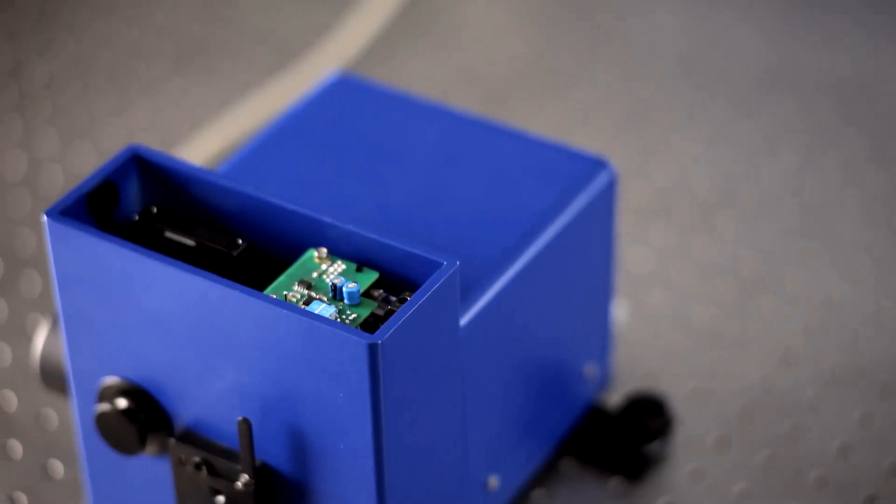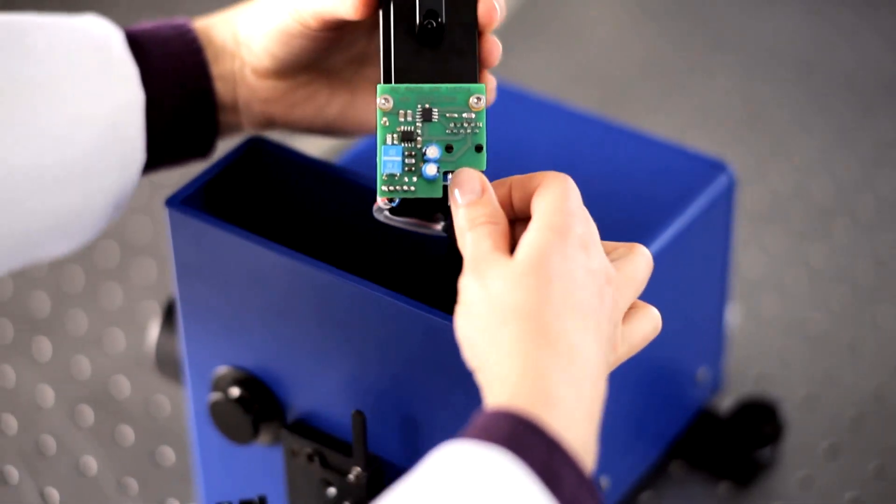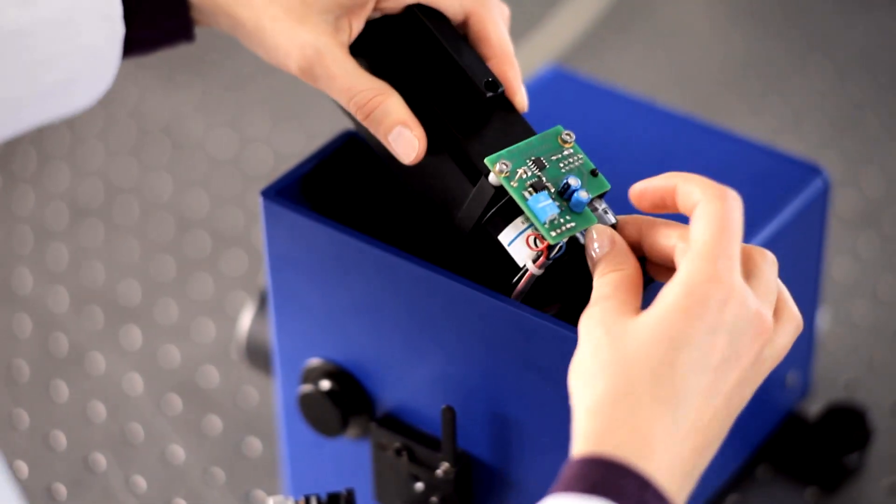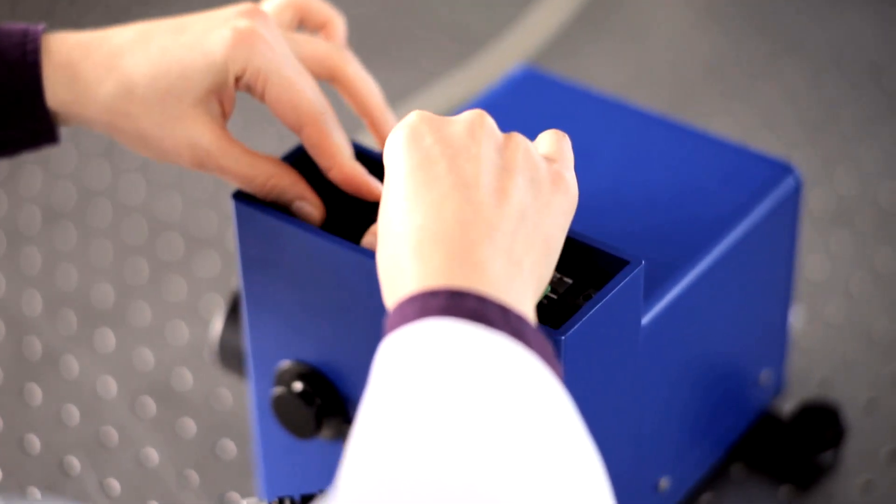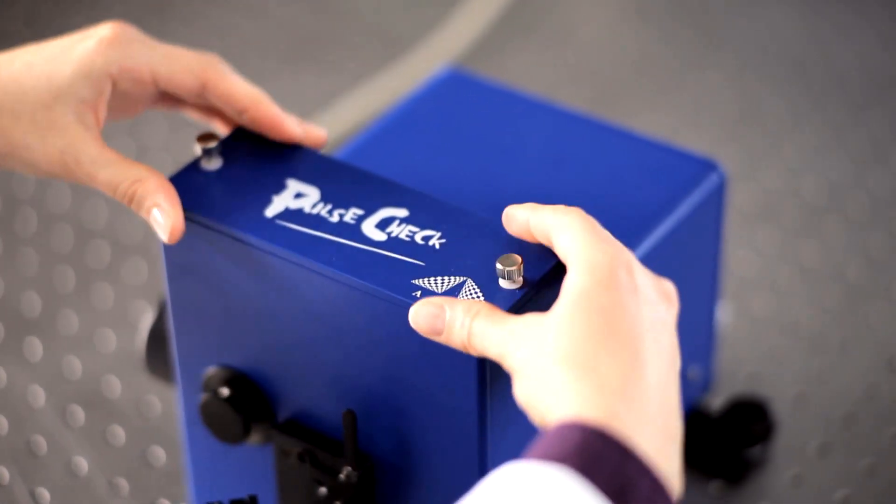Now, pull the retaining clip back and lift the detector unit out. Then unplug the connector. To replace the unit, plug in the connector, lower the unit into place, and listen for the click of the retaining clip. Then secure the lid. Simple.